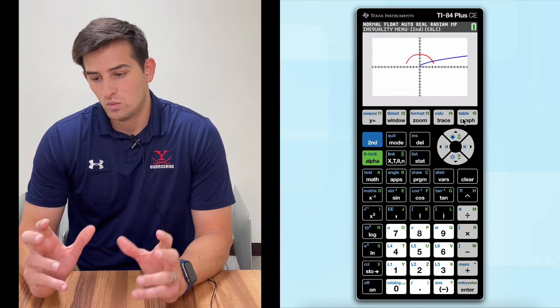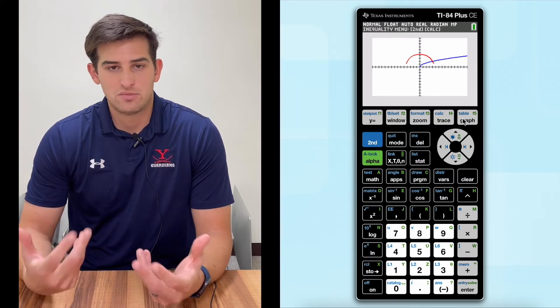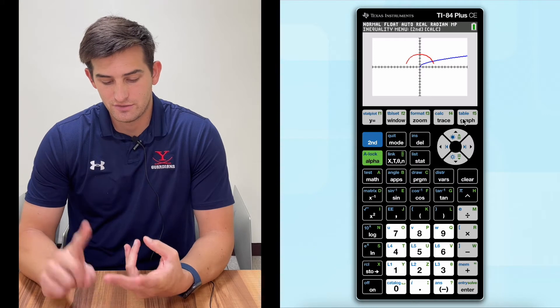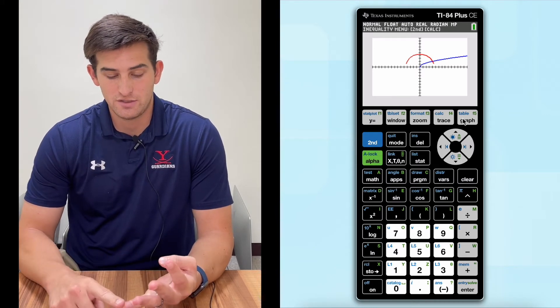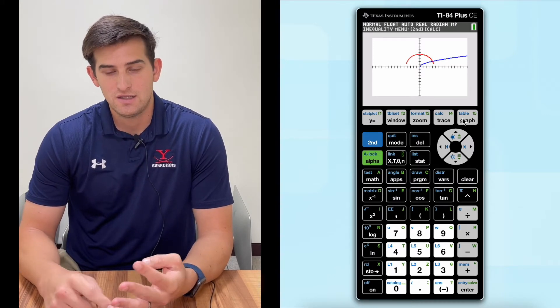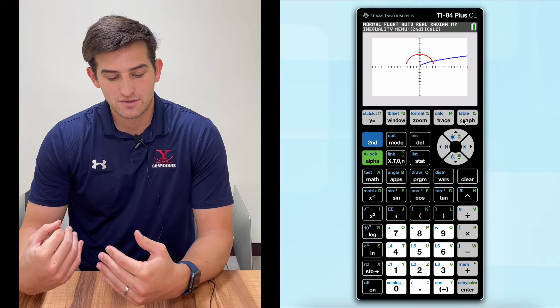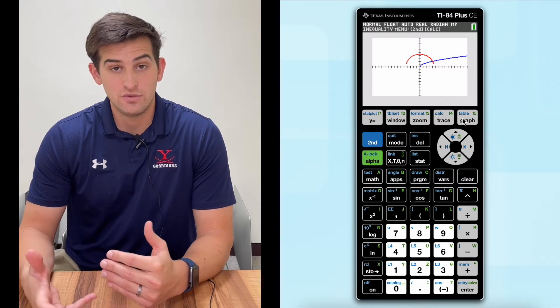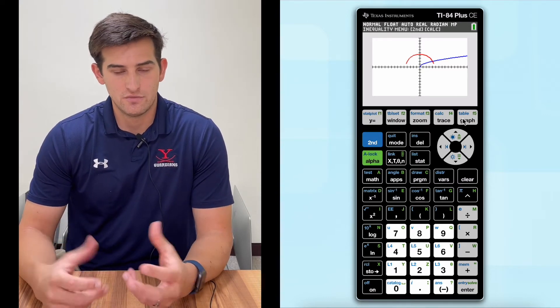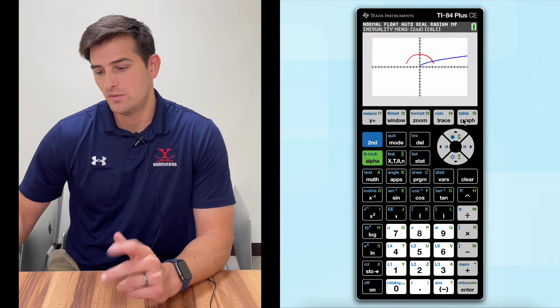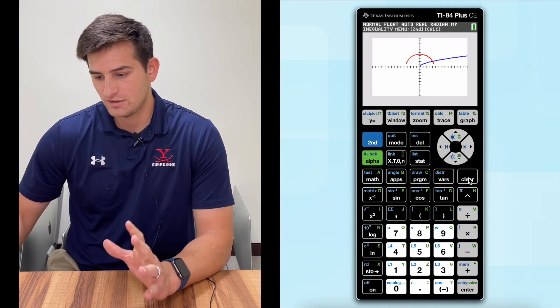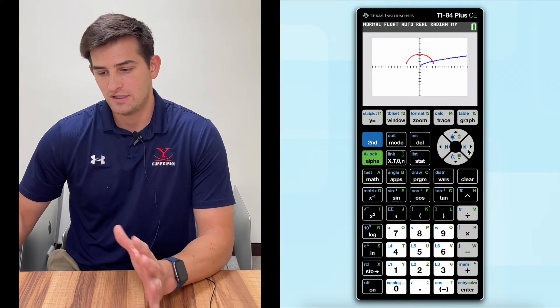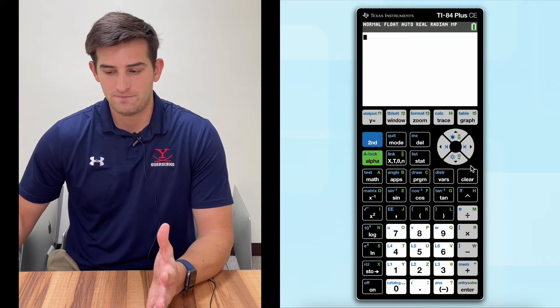Now we're going to perform some operations. We want to add these two functions, subtract them, multiply them, and divide them. We're going to figure out when X is equal to three, what's the Y value. Here's how we can do that. Let's clear this right now — we still have our two functions in our Y equals screen, so we hit clear and we know they're still there.